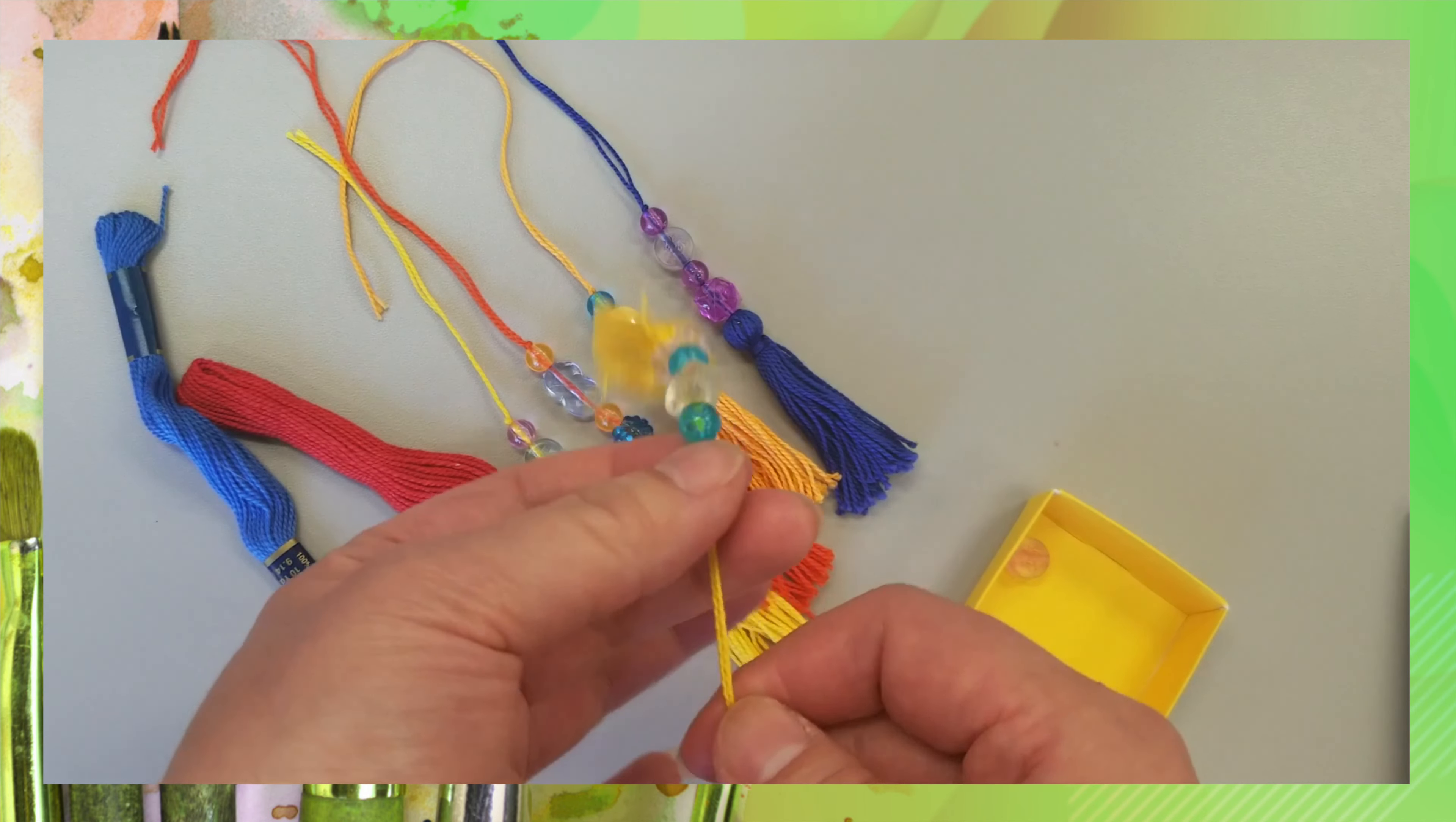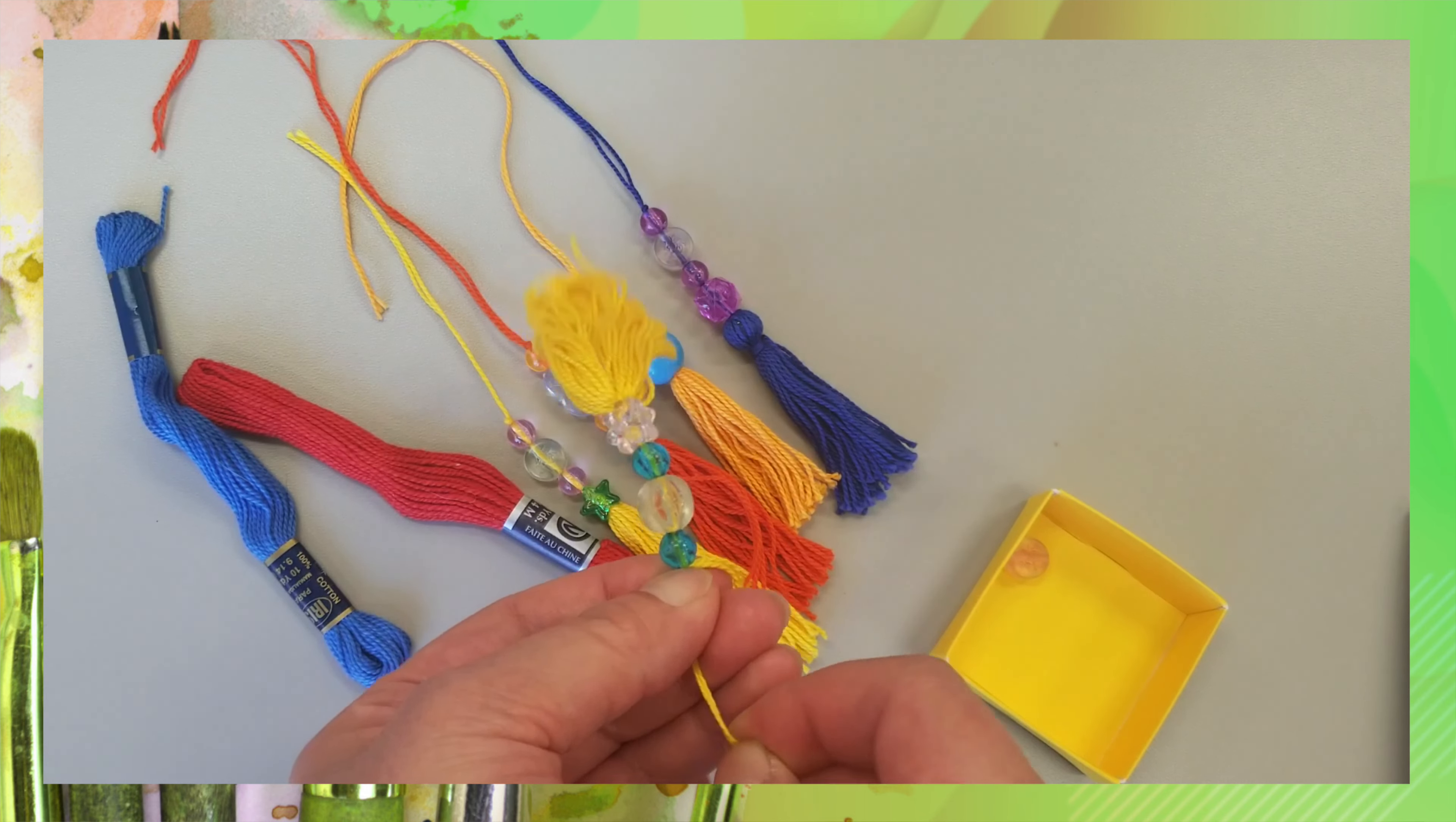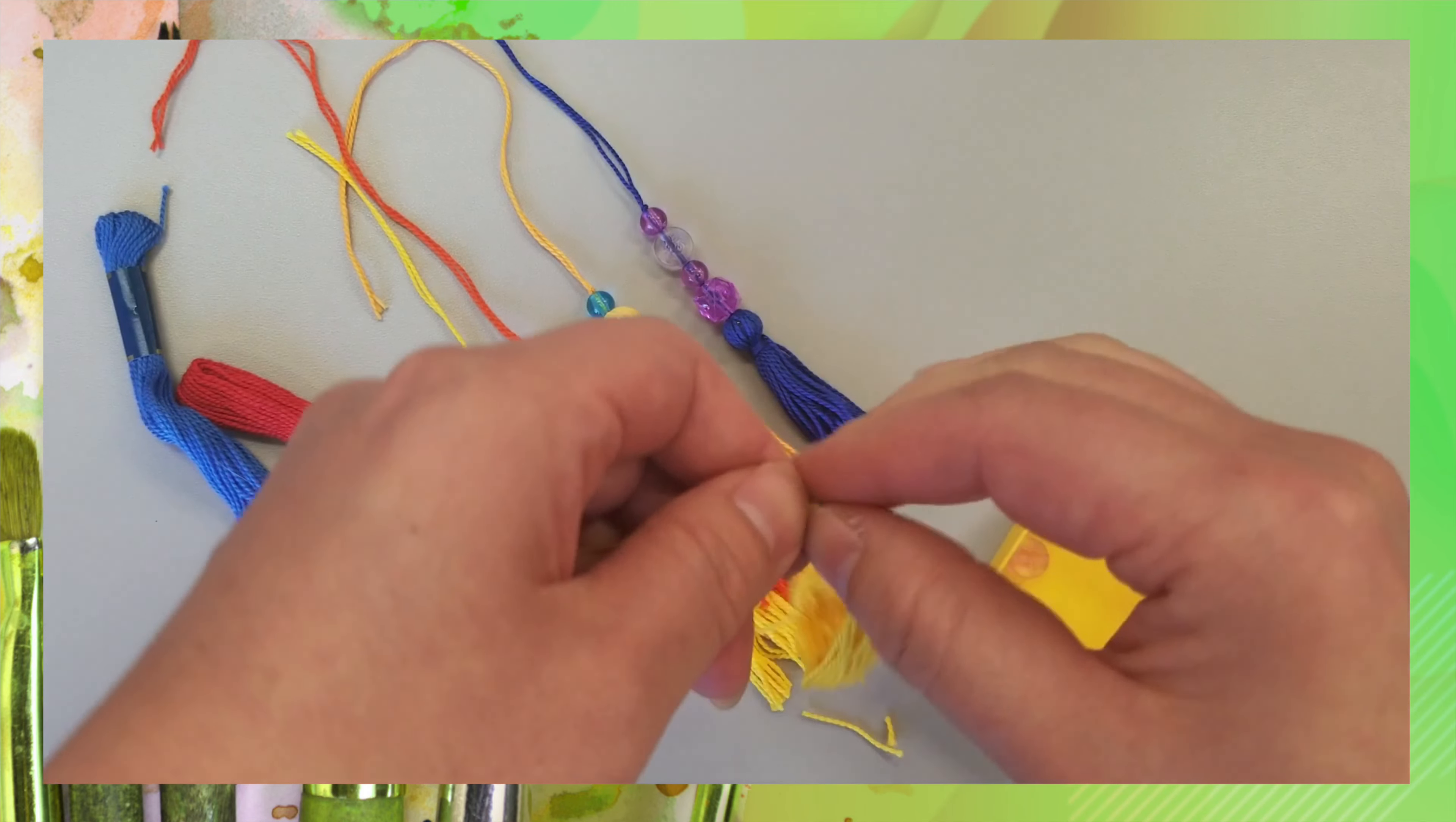So once you put in the last bead, wrap it around your finger and we're going to tie a knot to keep it from coming loose. And just use your nails to kind of keep the knot at the top of your bead like that.